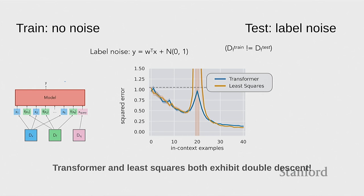Question: what's the intuition for why double descent happens? That's maybe a longer question — a quick answer is that in the overparameterized regime, statistically you'd expect: you fit, and then you start overfitting when there's noise. If there's no noise, there's no overfitting because you just nailed it. What people have observed is that overparameterization — when the number of dimensions is larger than the number of examples — you get this sort of optimal error. Happy to chat more later.